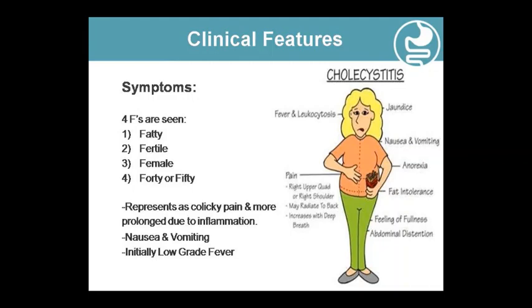Clinical manifestations include pain radiating from the right upper quadrant to the right shoulder, from back to front. There is fat intolerance, a feeling of fullness in the chest, and abdominal distension. The patient also feels chest tightness and bloating.